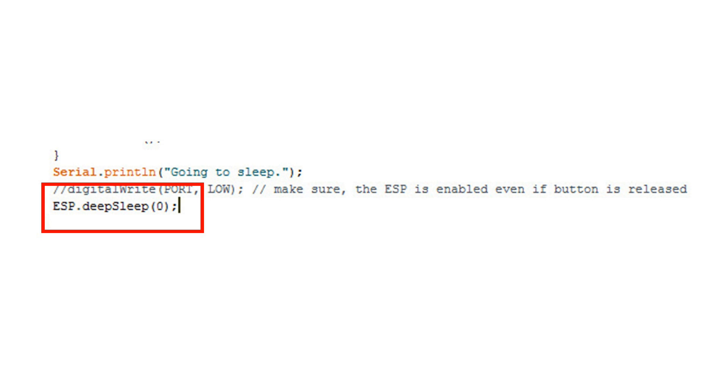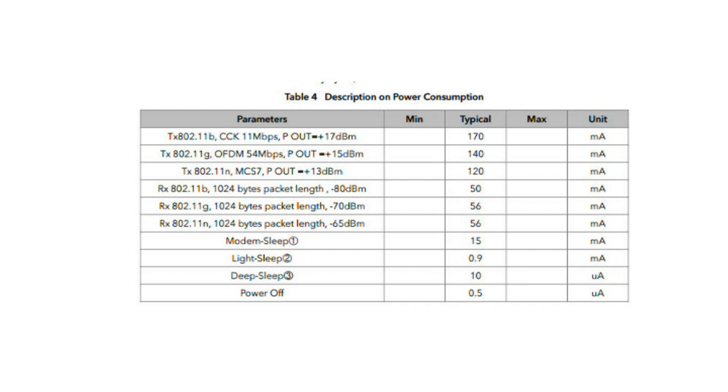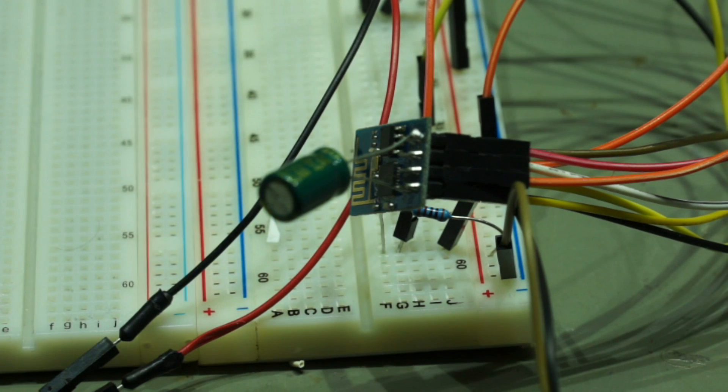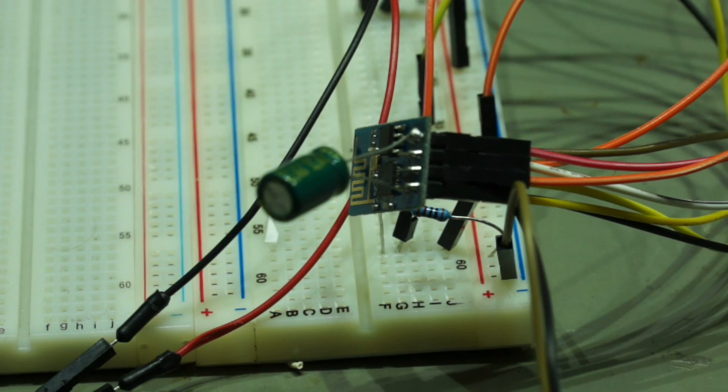Let's now quickly consult the datasheet. Really, during deep sleep, the ESP8266 should only use 10 uA. So I quickly set up a scenario with an old ESP01.